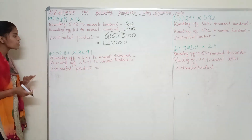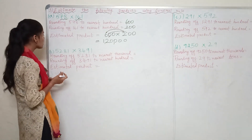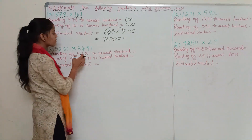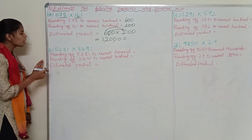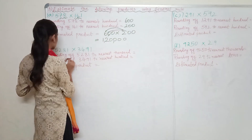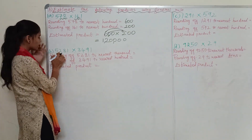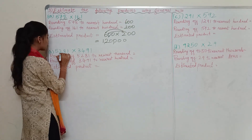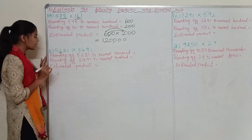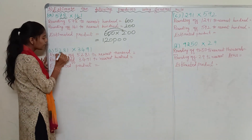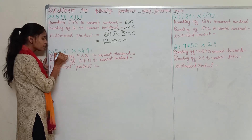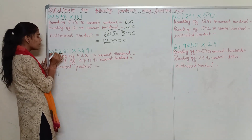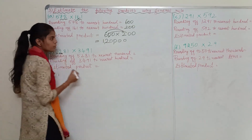Next, coming to our second question: 5,281 × 3,491. Rounding off to the nearest thousand. Since it is in the thousands, we look at the hundreds place. The number given is 2, and 2 is less than 5, so we round off to the lower number — that is 5,000.